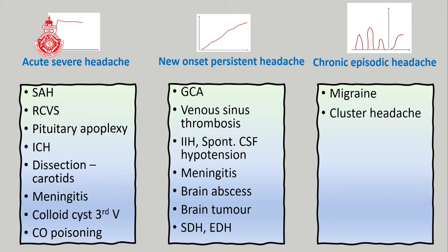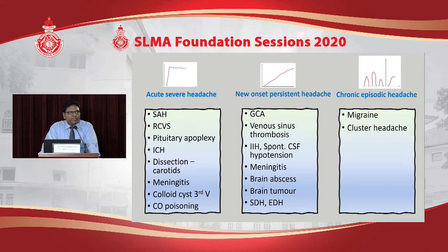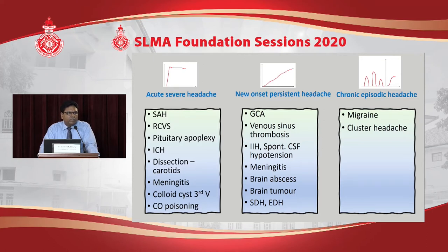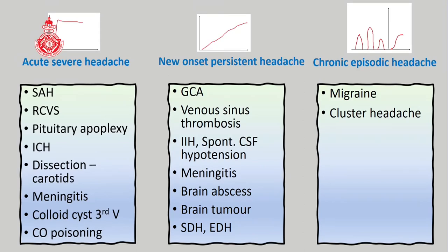For acute severe or thunderclap headache, key causes to rule out include subarachnoid hemorrhage, reversible cerebral vasoconstriction syndrome, pituitary apoplexy, intracerebral hemorrhage, carotid dissection, meningitis, colloid cysts of the third ventricle, and carbon monoxide poisoning. The progressive headache group includes giant cell arteritis, venous sinus thrombosis, idiopathic intracranial hypertension, meningitis, brain abscess, brain tumor, and subdural hematoma.